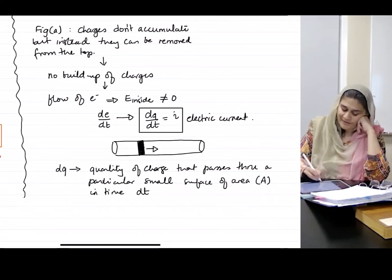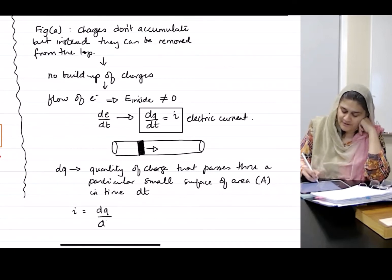And I is DQ over DT, where Q is expressed in Coulombs and time is in seconds.